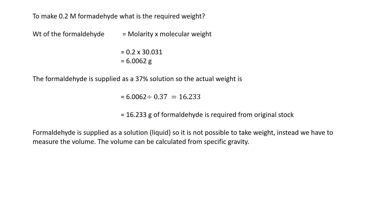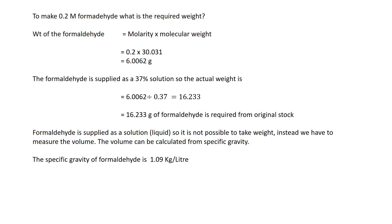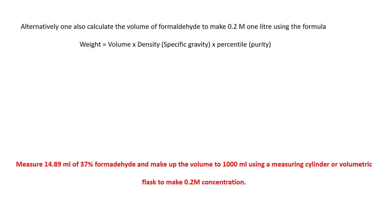However, since formaldehyde is supplied as a liquid, weighing it will not be accurate. So you have to apply the specific gravity. The specific gravity of formaldehyde is 1.09 kg per liter, and the volume to take is: volume = weight ÷ density = 16.233 ÷ 1.09, which gives 14.89 mL.